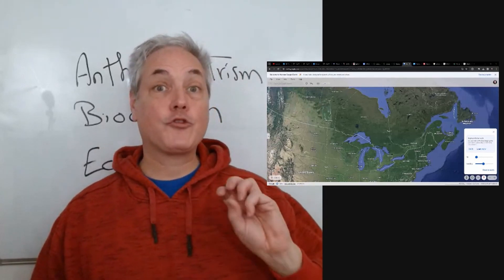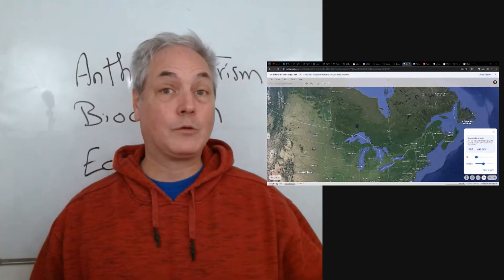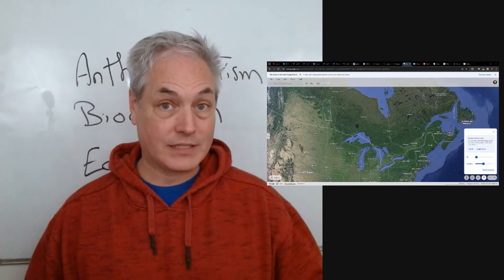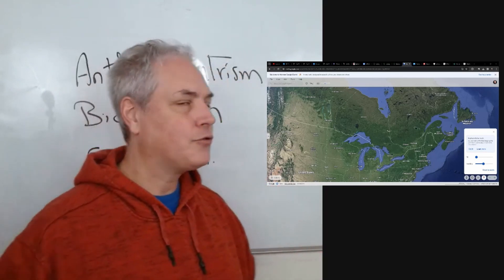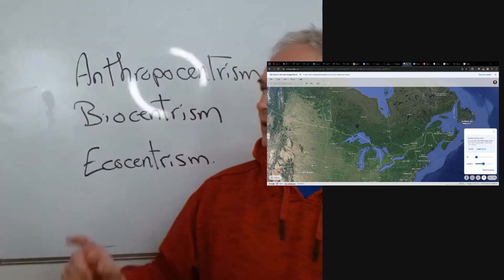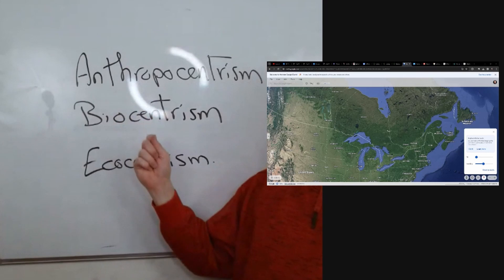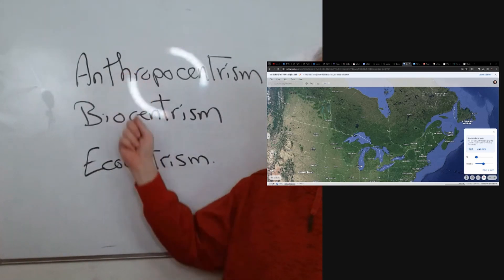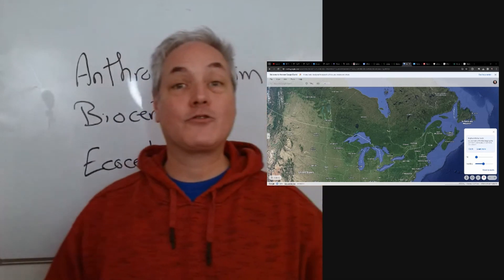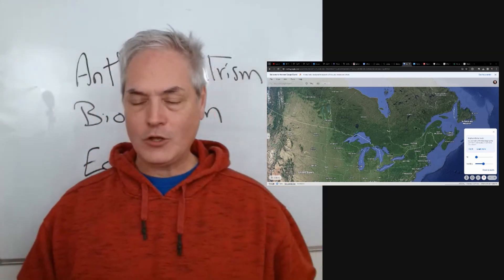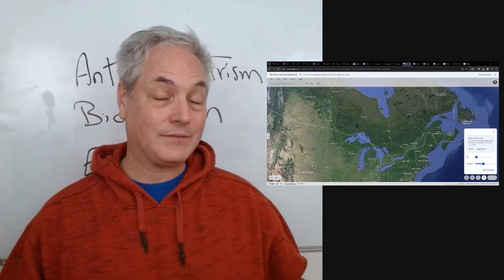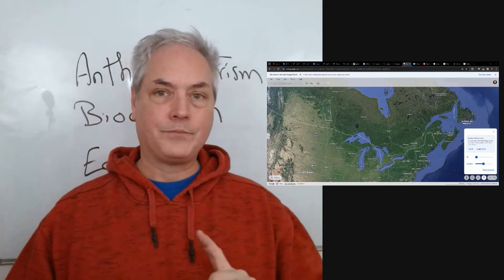In environmental science, there are three important words we can talk about: anthropocentrism, biocentrism, and ecocentrism. We're going to look at these three words as we go along. These are three different perspectives that we pay attention to.